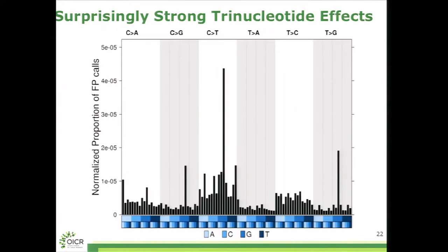The other big surprise to us was surprisingly strong trinucleotide effects. This is the false positive rate normalized to the genome as a whole for different trinucleotide repeats across the genome. It's very clear that there are certain peaks, and actually, that peak is a CCG moving to a CTG. So maybe not entirely surprising, but there are several other peaks in the genome that are of great interest.